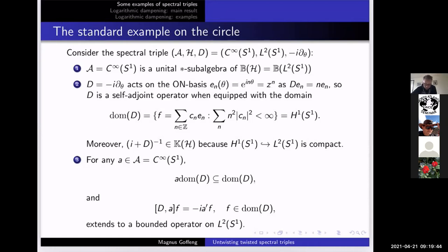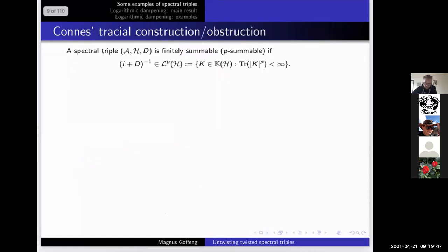So there's quite little wiggle room in this type of definition of a spectral triple in order to obtain something like index theory, to get a K-homology class. Roughly, you can relax the domain preservation condition to an equivalent condition saying that the algebra preserves a core for the self-adjoint operator. We'll see that in some of the examples.